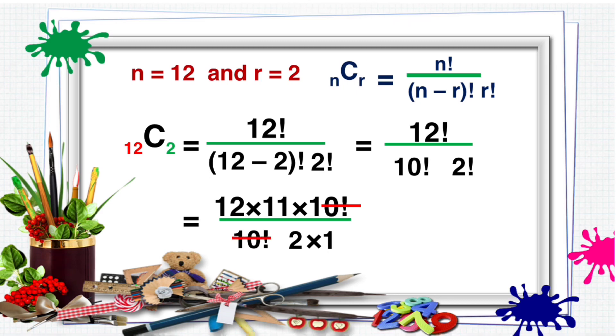Divide 12 and 2, that is 6, so the remaining numbers are 6 times 11, which is equal to 66 games.